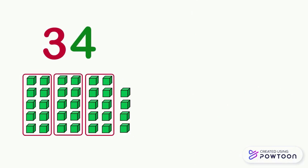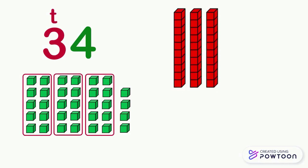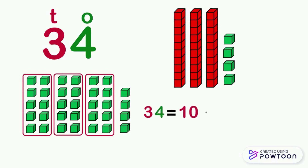In the number 34 there are three groups of ten, so three is the tens digit and four is the ones digit. We can say that 34 equals ten plus ten plus ten plus four.